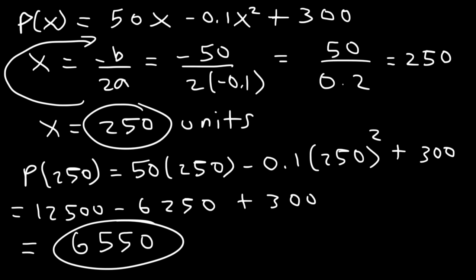Now the next type of word problem that you might see associated with this chapter is basically projectile motion, which is a physics topic. But you can use algebra to solve certain aspects of it. So let's say that the height of the ball can be modeled by the function h(t) which is 100 plus 30t minus 4.9t squared. Let's say t is in seconds and the height is in meters.